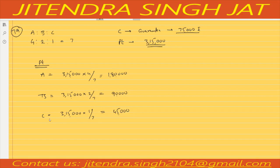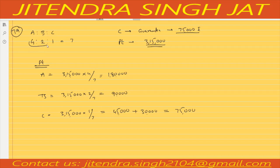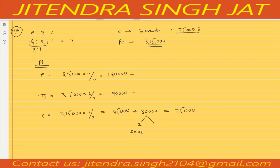According to ratio C is getting 45,000 but C has a guaranteed amount of 75,000, meaning 30,000 is the deficiency. Who will give 30,000 to make C's share 75,000? Nothing is mentioned in the question, so the existing partners A and B will give in their profit sharing ratio of 4 to 2, which is 2 to 1. Dividing 30,000 in ratio 2 to 1 gives 20,000 and 10,000.